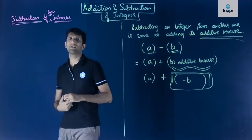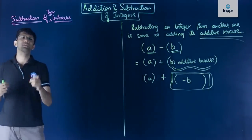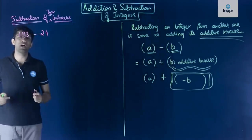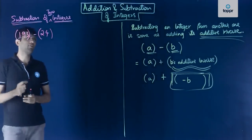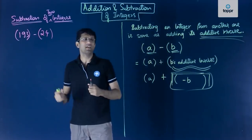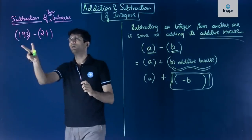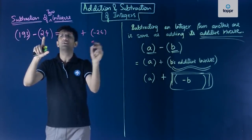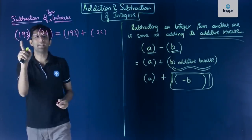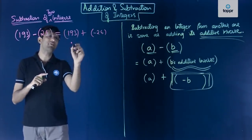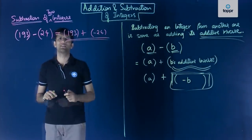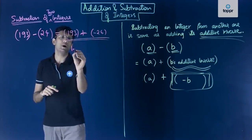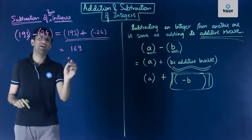Let us apply this method to some numbers. Suppose we need to compute 193 − 24. Subtracting 24 from 193 is the same as adding the additive inverse of 24, which is −24, to 193. So 193 − 24 = 193 + (−24). Performing this addition of two integers gives us 169.